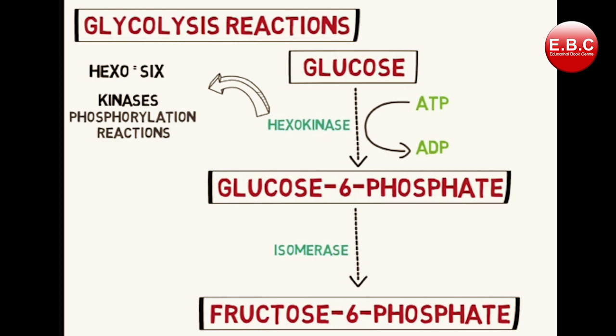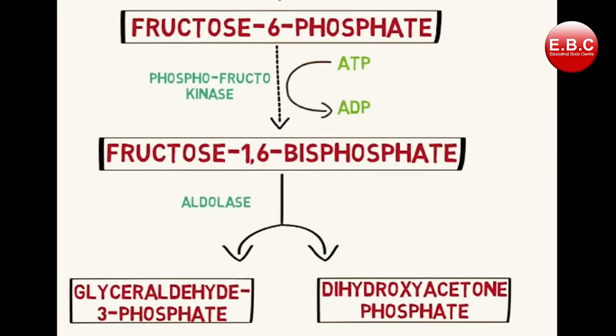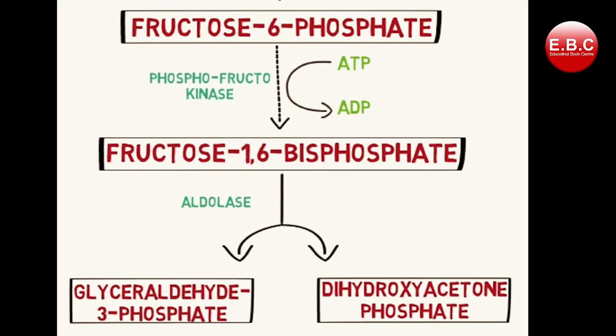Next, glucose-6-phosphate is converted to fructose-6-phosphate by the enzyme isomerase — this is a simple rearrangement reaction. Then, fructose-6-phosphate is converted to fructose-1,6-bisphosphate by the addition of one more phosphate group at the first carbon of the fructose ring. This reaction is catalyzed by the enzyme phosphofructokinase, another kinase enzyme that transfers a phosphate group from ATP, converting ATP to ADP. Hence, another ATP is utilized.